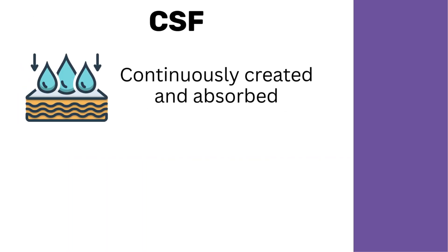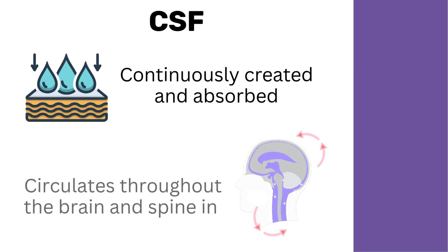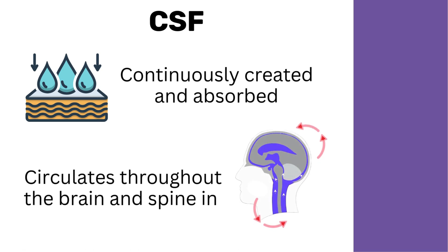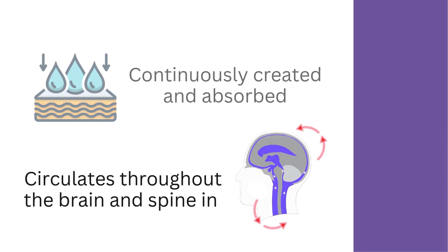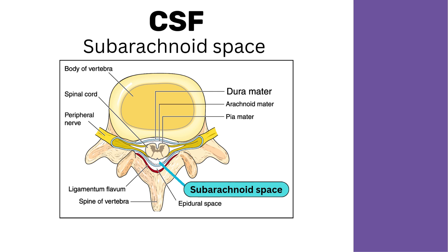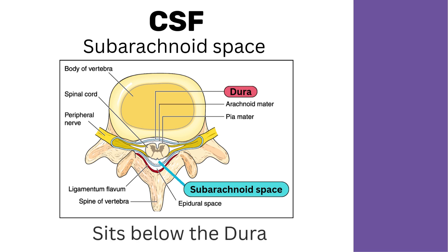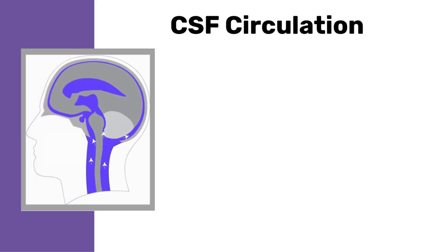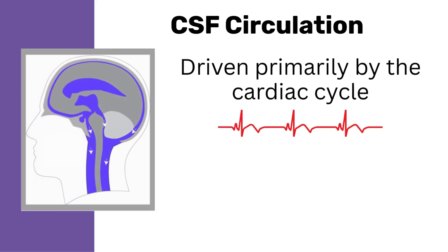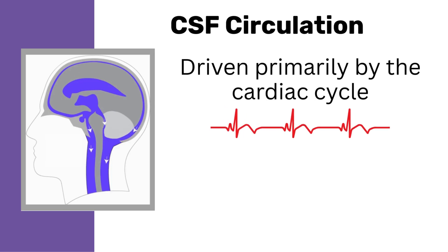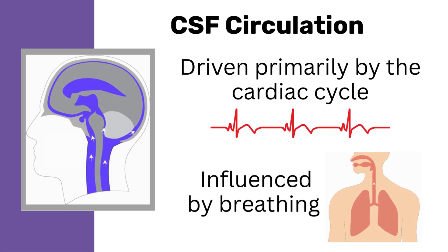CSF is continuously created and absorbed, and it circulates throughout the brain and spine in the subarachnoid space, which sits below the dura. CSF circulation is driven primarily by the cardiac cycle and is influenced by breathing.